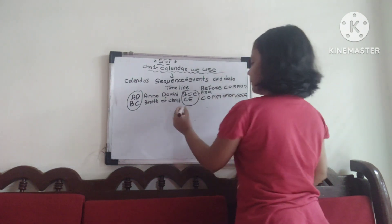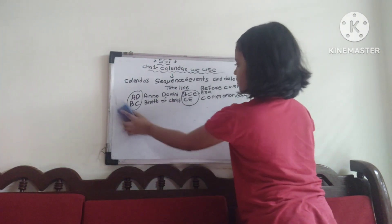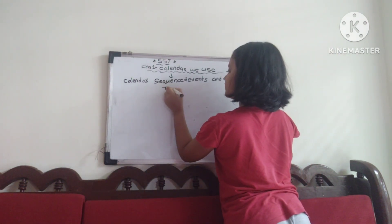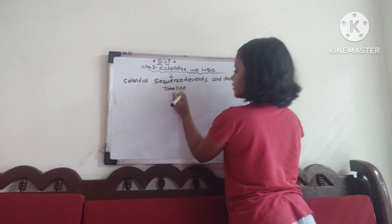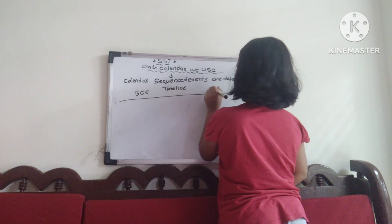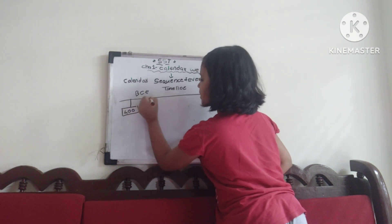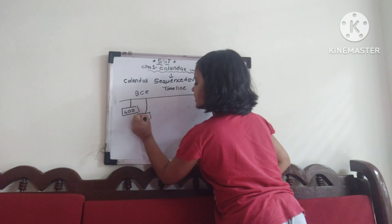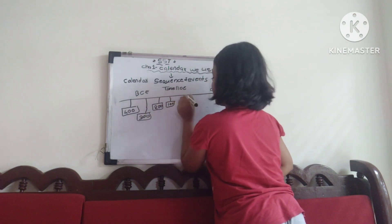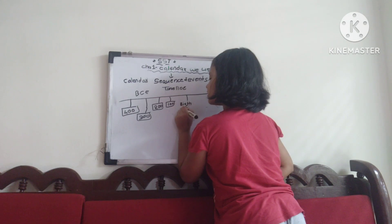For example, I am drawing a timeline. Here is BCE on one side and CE on the other side. On the BCE side I am writing 400, 300, 200, and 100. And here will come the birth of Christ.